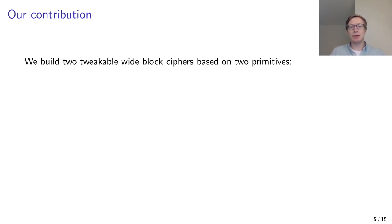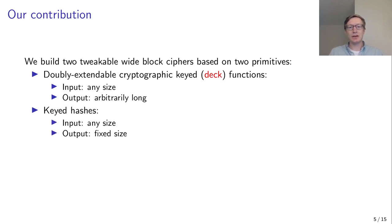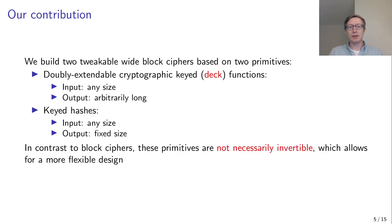We build two tweakable wide block ciphers based on two kinds of primitives. The first is the doubly extendable cryptographic keyed function, or DECK function for short — its inputs and outputs can be of any size. The second is the keyed hash function — its input can be of any size, but its output is a fixed size. In contrast to block ciphers, these primitives do not need to be invertible, allowing for more flexible and faster designs.